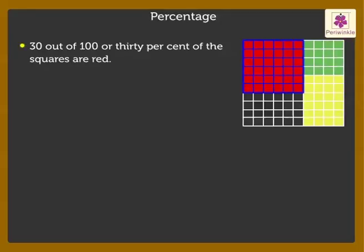30% is written symbolically as number 30 followed by the percent symbol. 30% means 30 upon 100 or 30 hundredths.